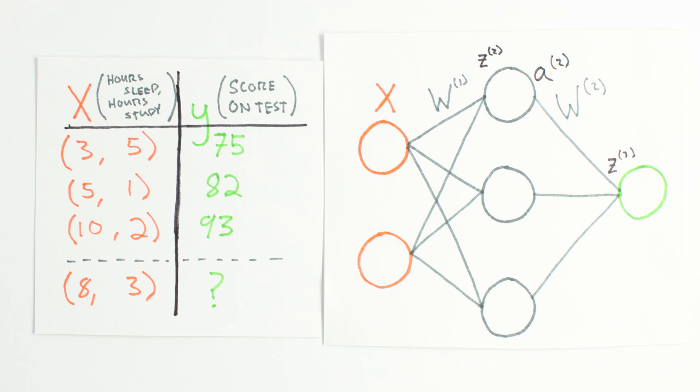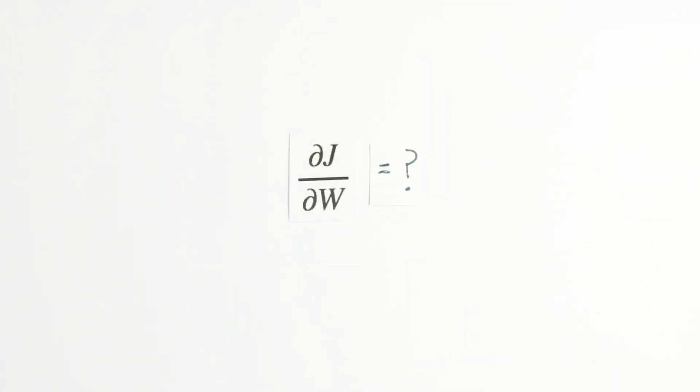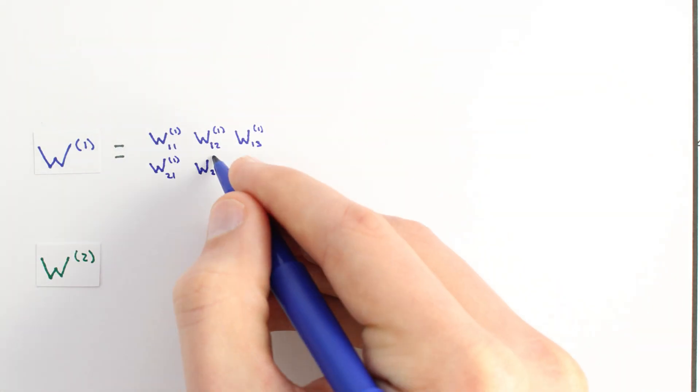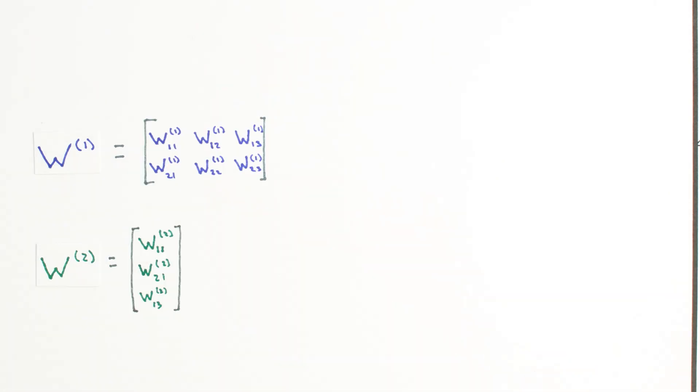To perform gradient descent, we need an equation and some code for our gradient djdw. Our weights w are spread across two matrices, w1 and w2. We'll separate our djdw computation in the same way, by computing djdw1 and djdw2 independently.